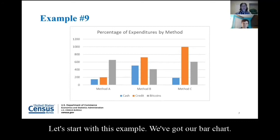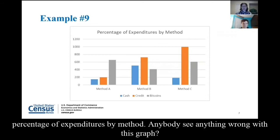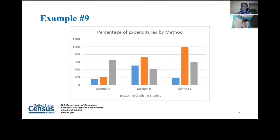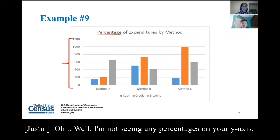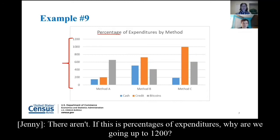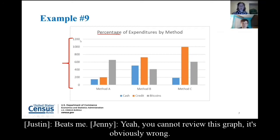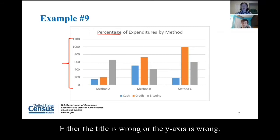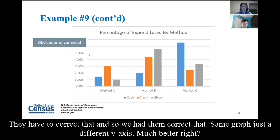Let's start with this example. We've got a bar chart — three different sources of expenditure — and we're looking at percentage of expenditures by method. Anybody see anything wrong with this graph? I'm not seeing any percentages on the y-axis. Sure aren't. If this is percentages of expenditures, why are we going up to 1,200? You can't review this graph. It's obviously wrong — either the title is wrong or the y-axis is wrong. So we had them correct that. Same graph, just a different y-axis. Much better.